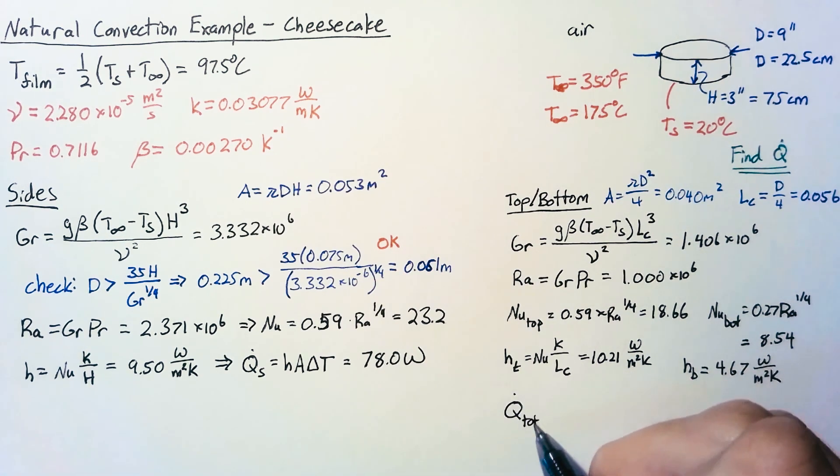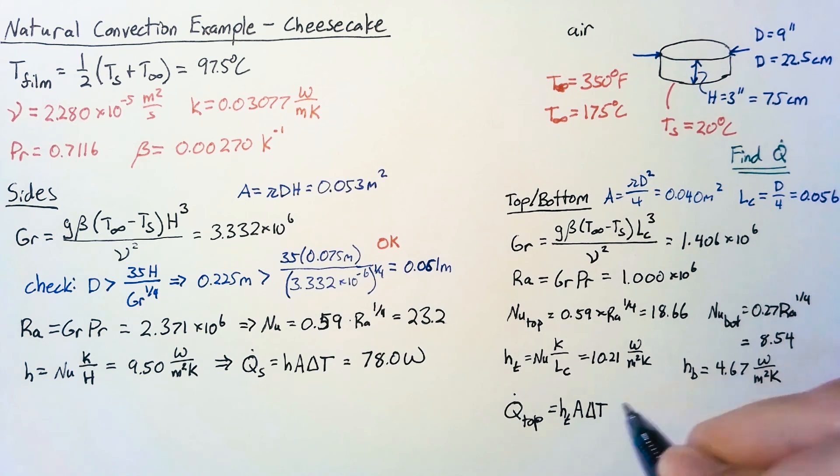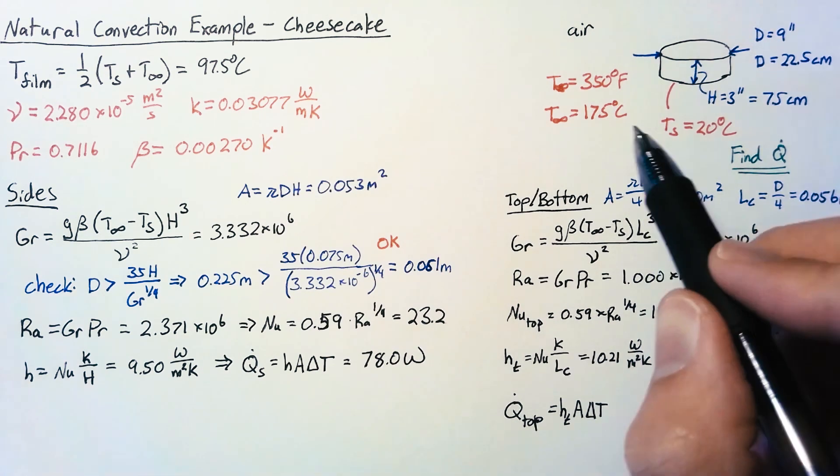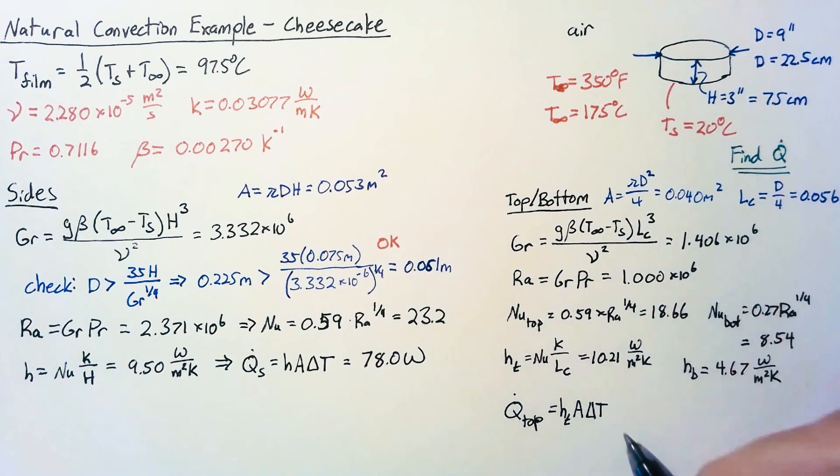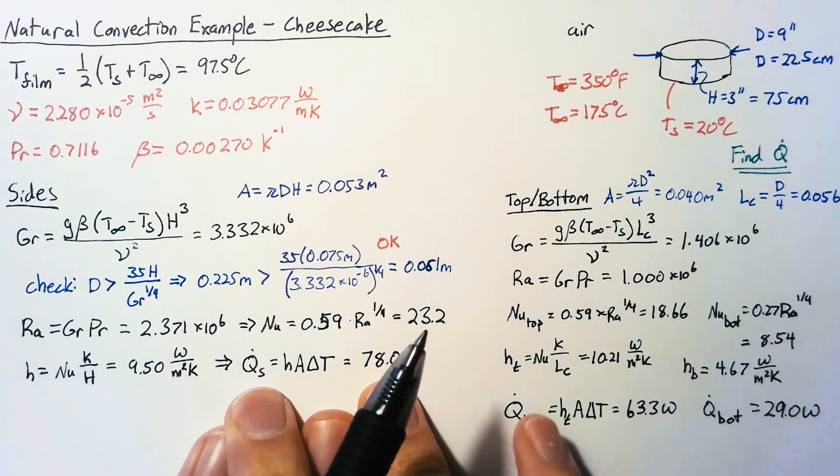So then finally we can finish up with Q dot for the top which is the h of the top multiplied by the area multiplied by delta T. For this one our area is pi D squared over 4 and the delta T is still the 155 degrees and so what we end up with is 63.3 watts and then our Q for the bottom is pretty much exactly the same but we end up with 29.0 watts and that just comes from using that different heat transfer coefficient.